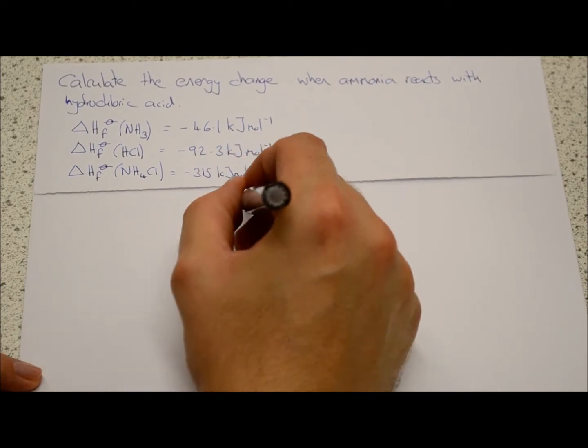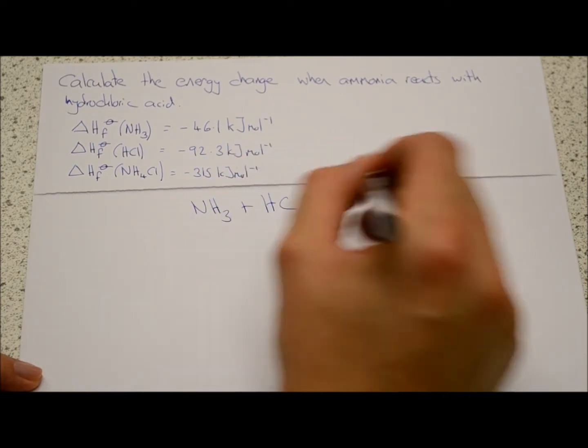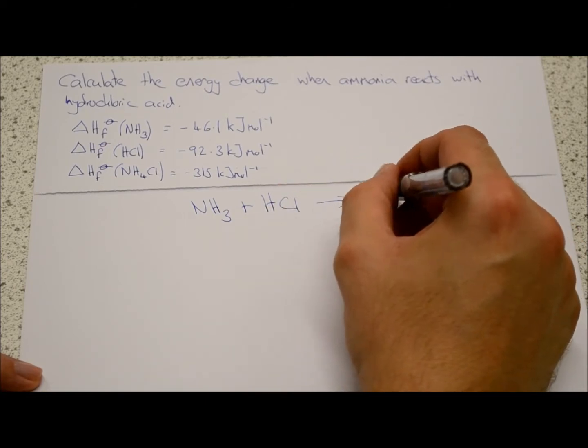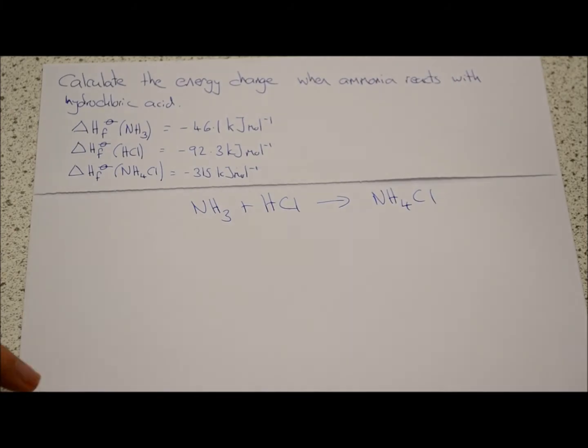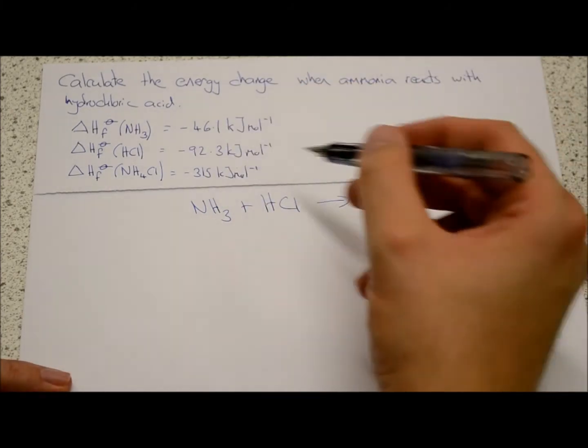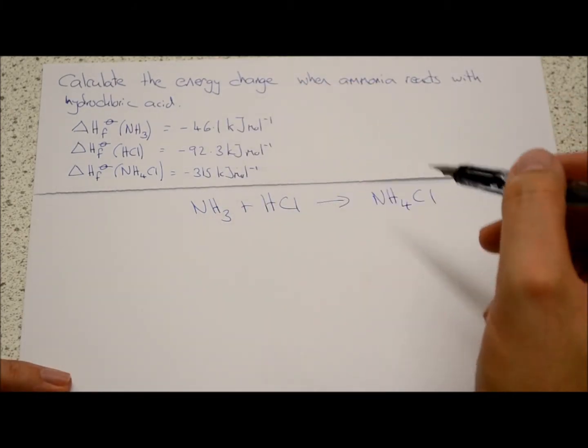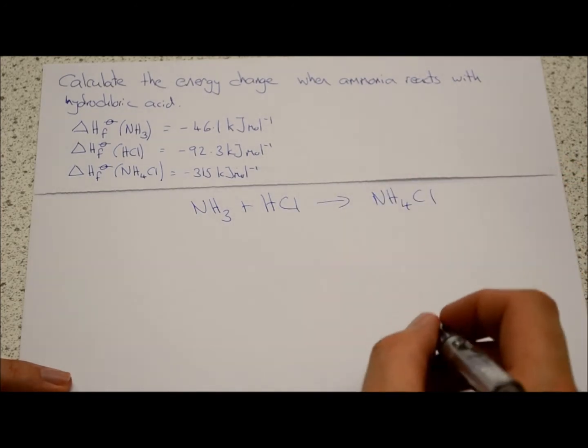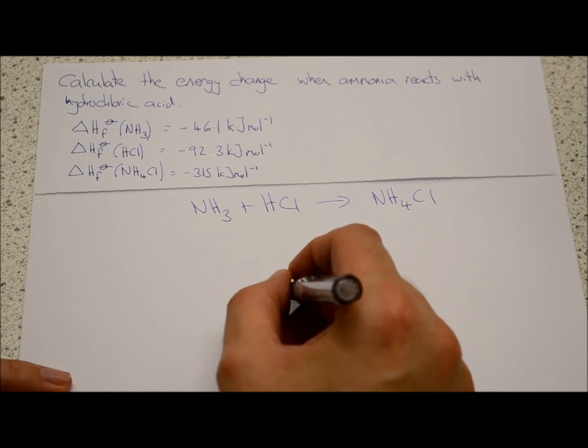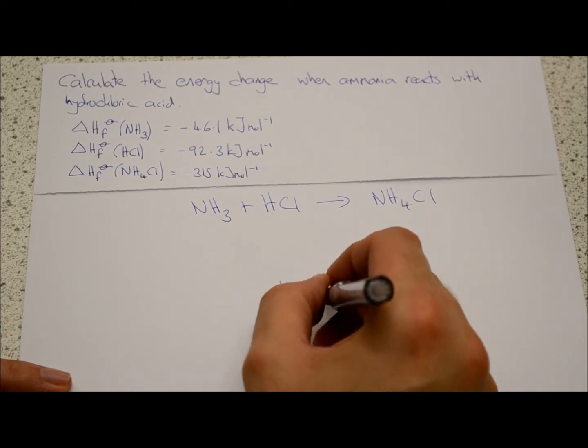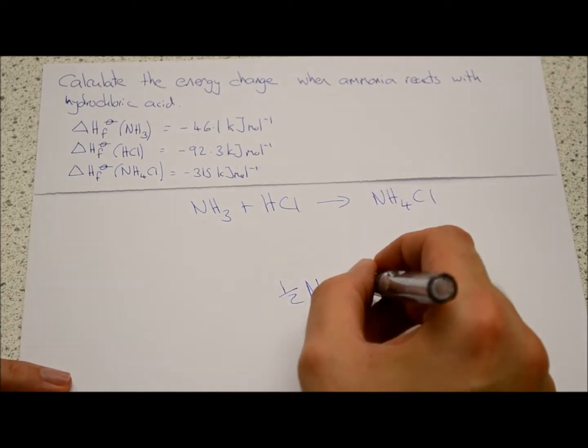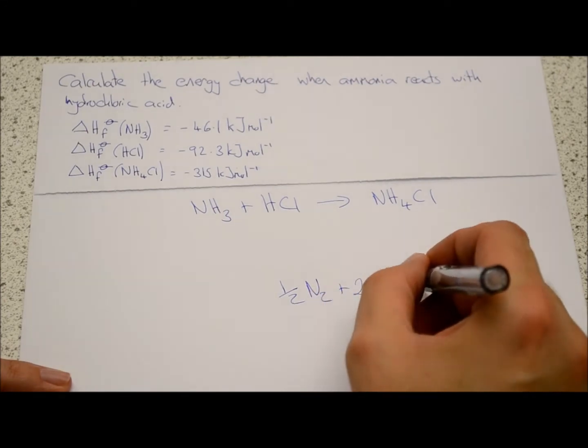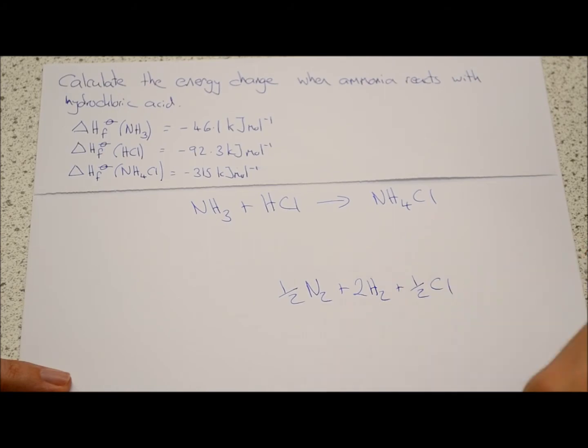Ammonia plus hydrochloric acid makes ammonium chloride, very straightforward. Now these enthalpies of formation tell us the energy required or given out when they're formed from the elements in their standard states. So to form them we need half a mole of nitrogen, we need two moles of hydrogen, and we also need half a mole of chlorine.